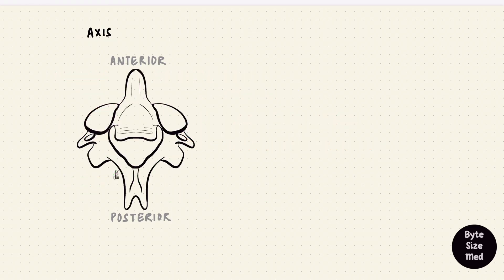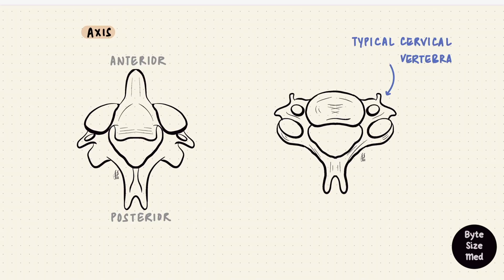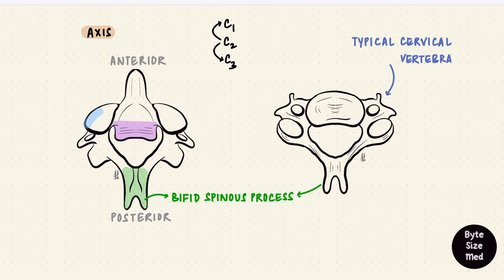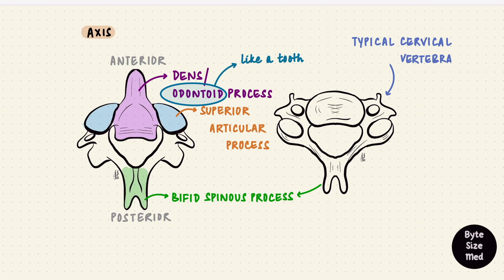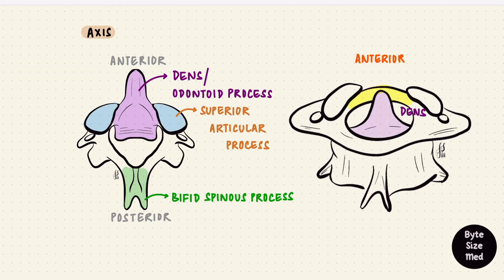Below atlas sits axis. Axis looks more like a typical cervical vertebra — it has a body and a spinous process, which is bifid as most cervical vertebrae are. It too has those transverse foramina. Its inferior articular processes articulate with the superior articular processes of C3. The superior articular processes of axis articulate with the inferior processes of atlas. But what's obviously different about axis is that the body extends upwards as a blunt projection called the dens, or the odontoid process, because it looks like a tooth. That dens fits behind the anterior arch of atlas, so the dens is posterior to the anterior arch of atlas.